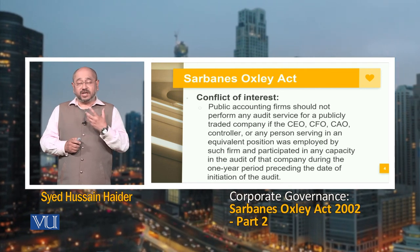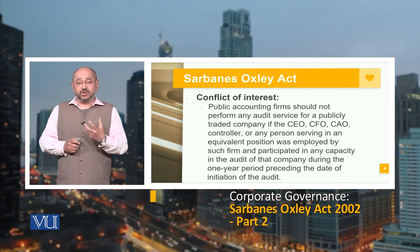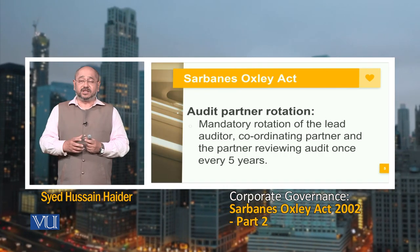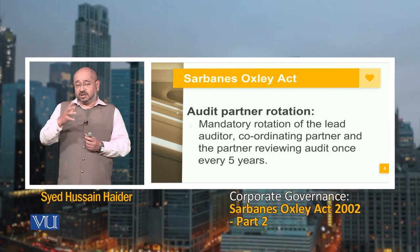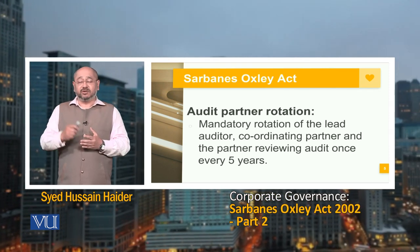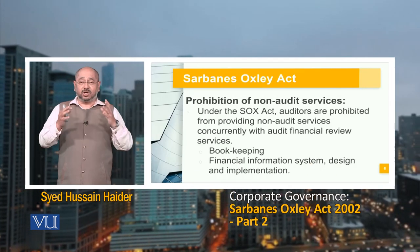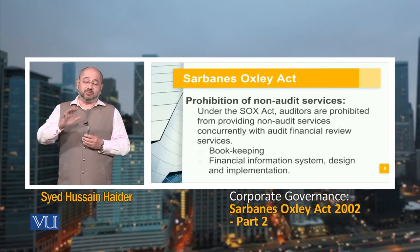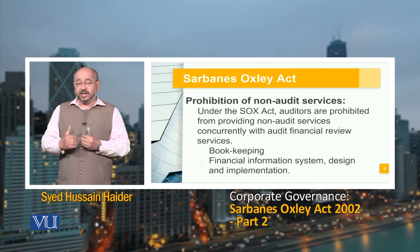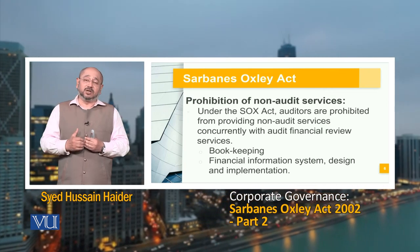The CEO, CFO, or controller of accounts cannot be from the same audit firm, because if they are, there is a conflict of interest — and that could lead to financial inappropriateness and accounting irregularities. Another very important aspect is audit partner rotation: mandatory rotation of the lead partner, lead coordinating partner, the lead auditor, and the partner reviewing the audit, once every five years. This is a check and balance so that a new team comes in at least every five years to review the previous team's performance, preventing a monopoly over this influential position.